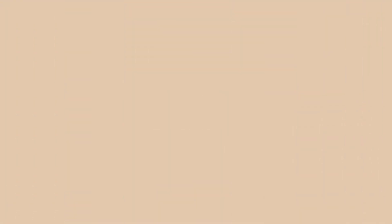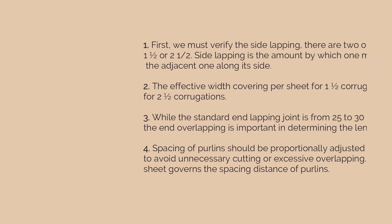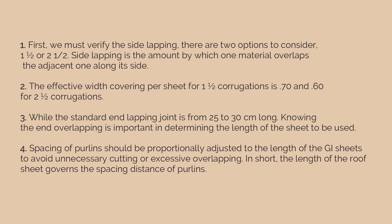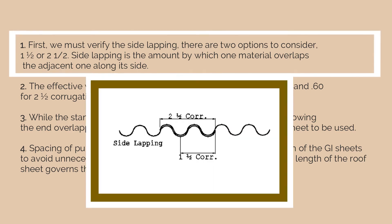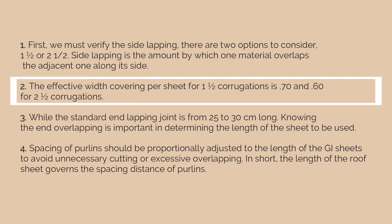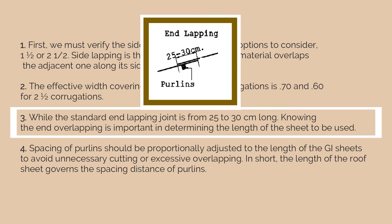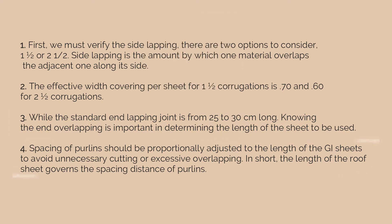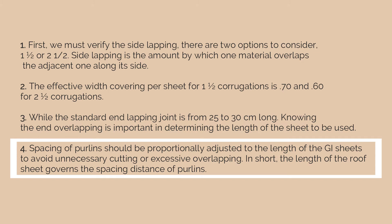Before learning the estimate pertaining to roofing materials, here are important basic considerations for corrugated GI sheets. First, verify the side lapping — there are two options: one and a half or two and a half corrugations. The effective width covering per sheet is 0.70 for one and a half corrugations and 0.60 for two and a half. The standard end lapping joint is from 25 to 30 centimeters long. Spacing of purlins should be proportionally adjusted to the length of the GI sheets to avoid unnecessary cutting or excessive overlapping — in short, the length of the roof sheet governs the spacing distance of purlins.